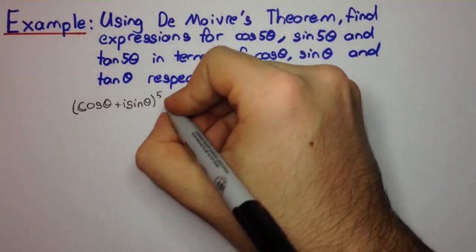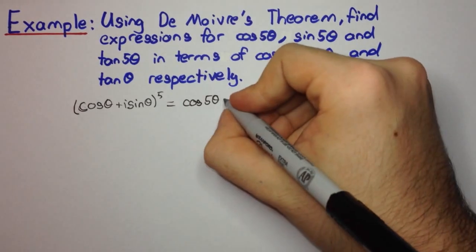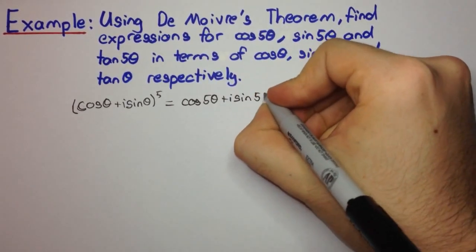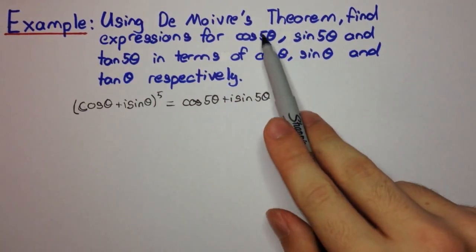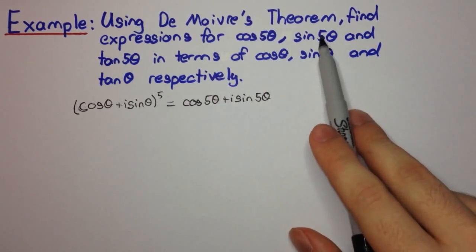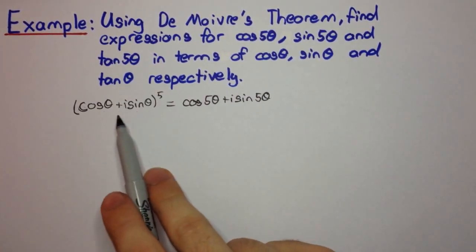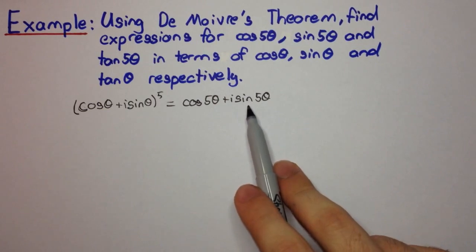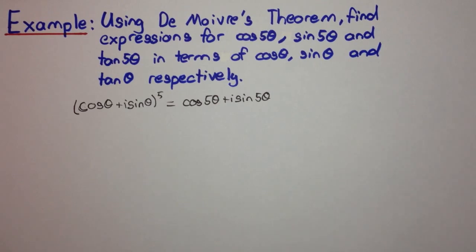By De Moivre's theorem this gives us directly cos 5θ + i sin 5θ. That's just a direct application of De Moivre's theorem. Now let's have a look at what we want. We want cos 5θ in terms of cos θ and sin 5θ in terms of sin θ. If we consider this in terms of De Moivre's theorem, we can also consider this in terms of an expansion through the binomial theorem.